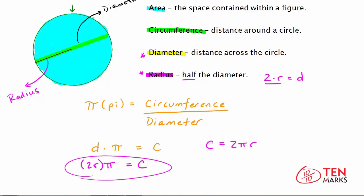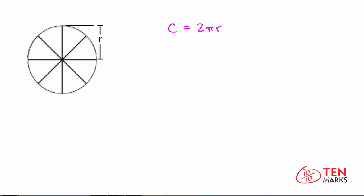Now let's talk about how we can use the circumference formula to understand where the area formula of a circle comes from. We've got our circumference formula C = 2πr, and now we have this circle that we've divided into eight wedges.